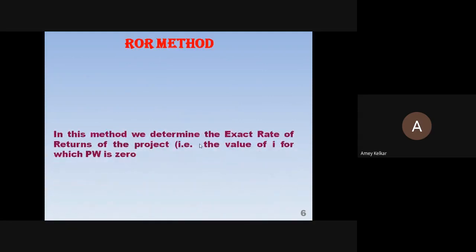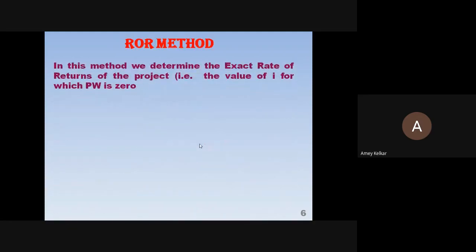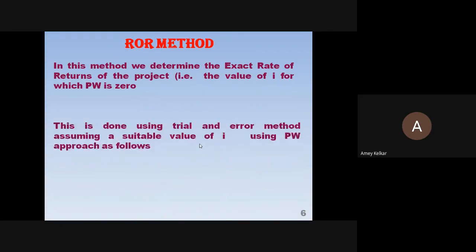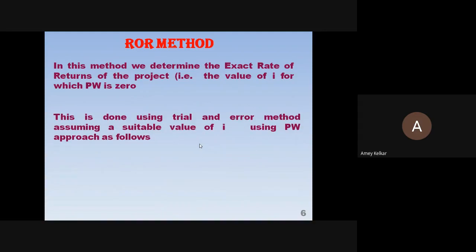In the rate of return (ROR) method, we determine the exact rate of return of the project — the value of i for which present worth is zero. We need to find the value of i at which present worth becomes zero. If i is above that value, the project is feasible; if below, the project is not feasible. This is done using trial and error by assuming values of i and applying the present worth approach.